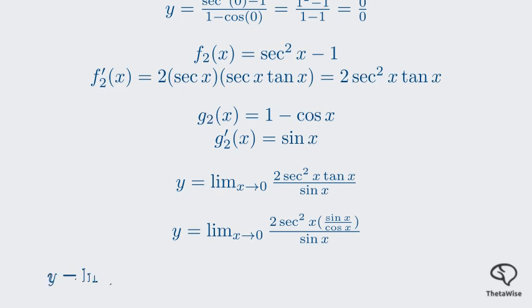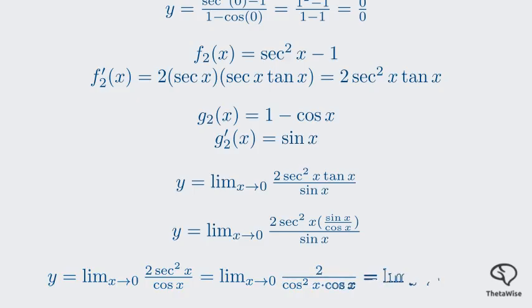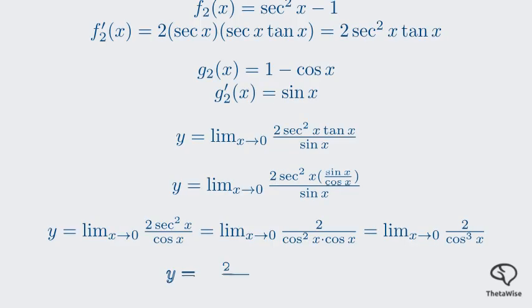After canceling sin x, our expression simplifies to 2 secant squared x, all divided by cos x. Since secant is the reciprocal of cosine, this is the same as 2 over cosine squared x divided by cos x, which equals 2 over cosine cubed x. Now for the moment of truth. Let's substitute x equals 0 one more time. We have 2 divided by cos(0) cubed. We know cos(0) is 1, so we get 2 divided by 1 cubed, which is 2 divided by 1. And our final answer is 2.